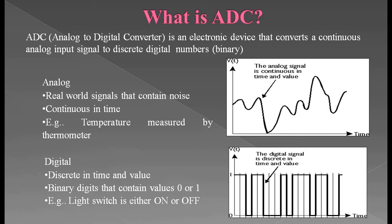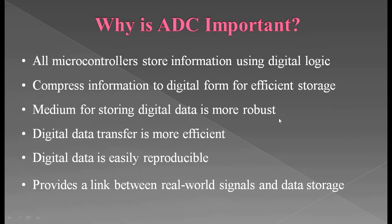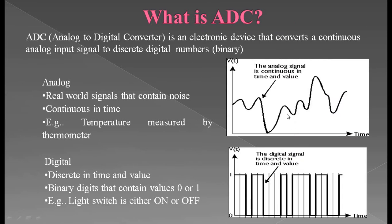An analog signal is a real world signal which is continuous with time. For example, temperature measured by a thermometer, or the speed measurement of a moving car, is also a continuous signal with respect to time — that is a real world signal, so it is called an analog signal. In the diagram shown here, the analog signal is in continuous form in time and value. Time is on the x-axis and some function of time, such as velocity or speed, is on the y-axis. According to time, the value of speed is continuously changing, so it is called an analog signal.